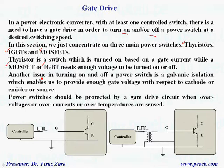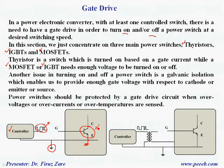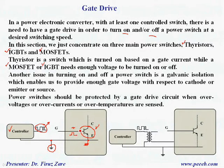In some applications, we need galvanic isolation. When we have a controller, what we get is a pulse pattern with respect to ground. In some applications, we have a switch placed in the circuit with its emitter connected to ground. If the voltage level is sufficient, we may turn on and turn off the switch without any problem, because to turn on and off a MOSFET or IGBT, we need to provide a positive voltage with respect to the emitter. Since the emitter is connected to ground and we already have positive voltage, we are able to turn on and off the switch.